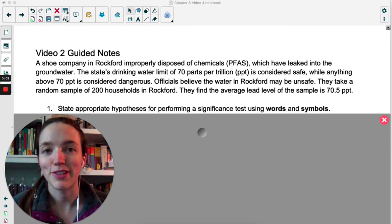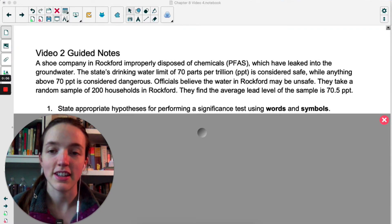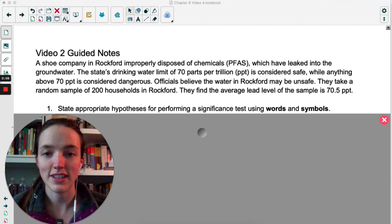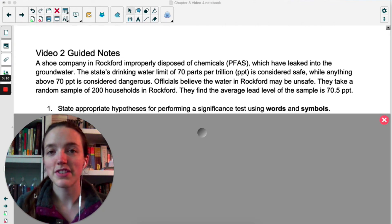We're going to start this video by looking at a rather serious example. We're going to do a significance test to decide if the drinking water in this town is safe or not. The point of this video is we're going to examine what happens when we make the wrong conclusion.